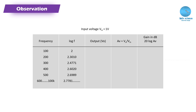We have readings from 100 Hz to 900 kHz. The output voltage V0 is measured, and Vin is set to 1 V. The output voltage is measured on the CRO graph.